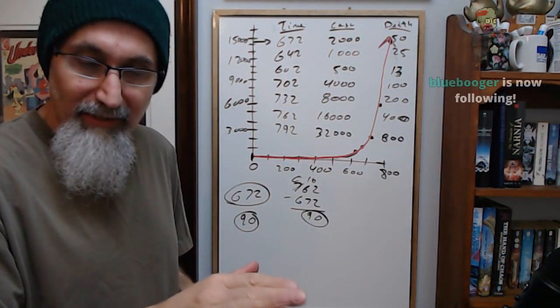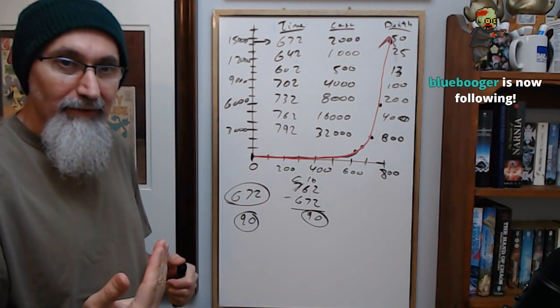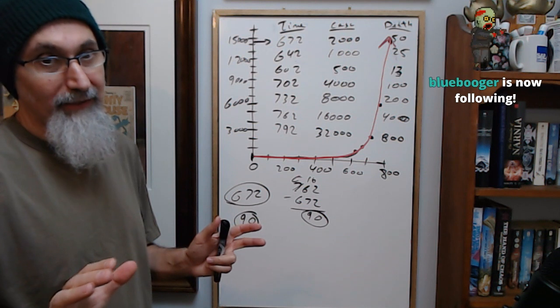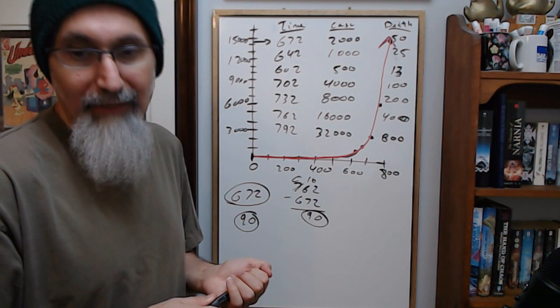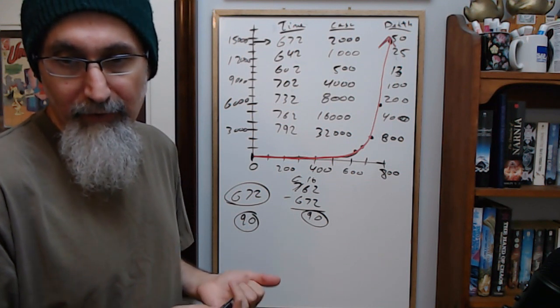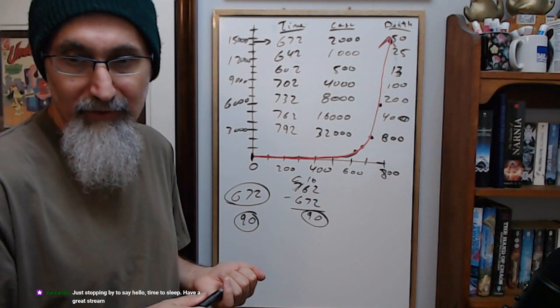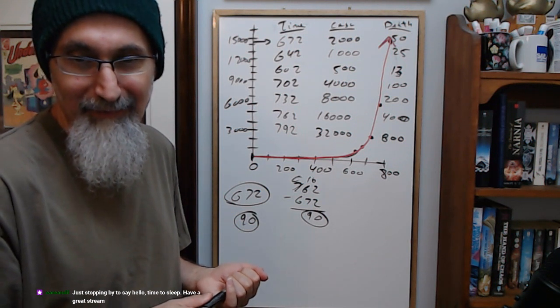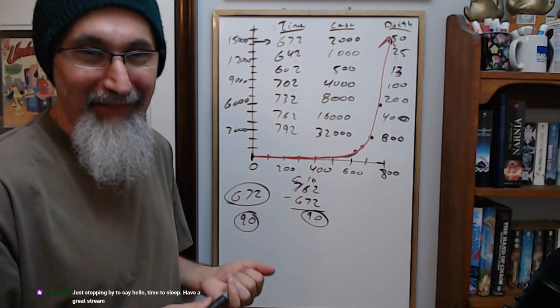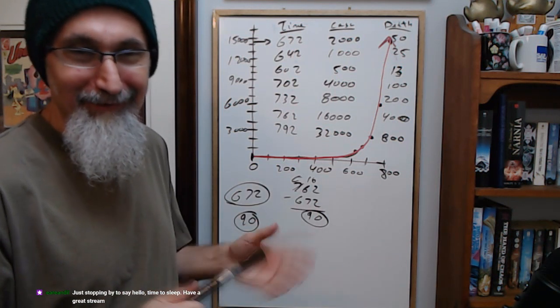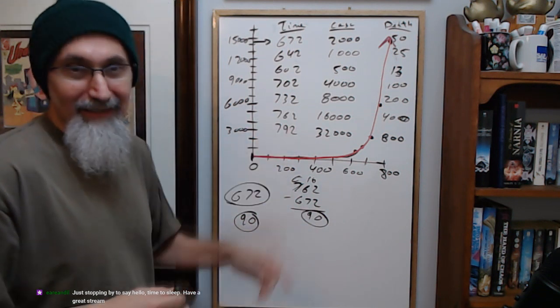That's what we're seeing here, from there to there. So this amount of time, 14,000 cases. This amount of time, 2000. What's going to happen in next 30 hours? If we go 792, before 8000, double it, 32,000, and this is going to be 800 deaths. The crazy thing with exponential function is you go back one level, things look okay as compared to where you are now. Thank you very much for the subscribe. Thank you very much for the sub, brother. Just stopping by to say hello, time to sleep. Have a great stream. Sweet dreams. Sorry about the morbid math. We should have done happy math for nice sweet dreams.